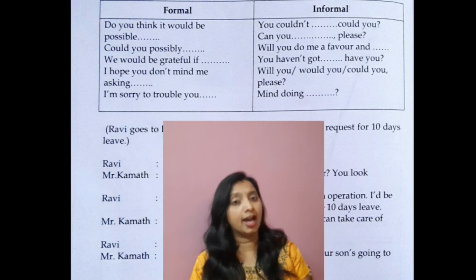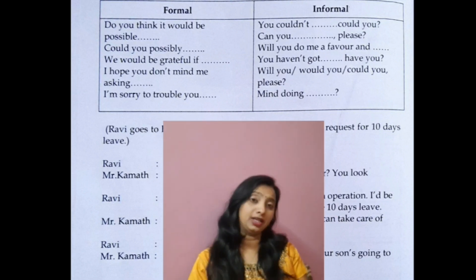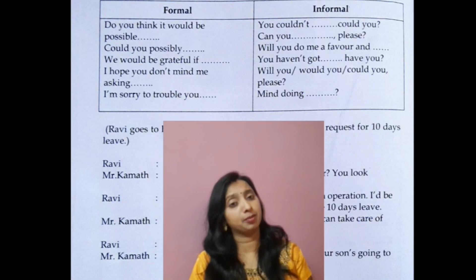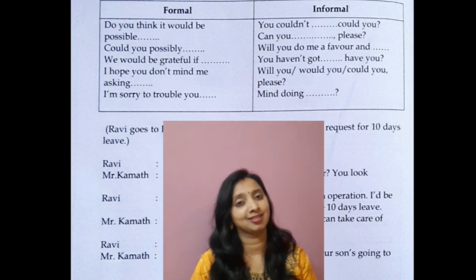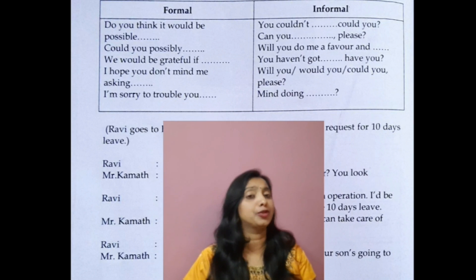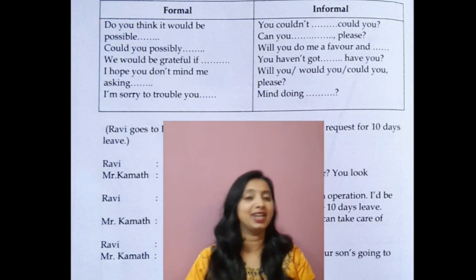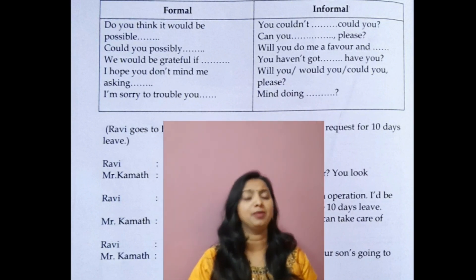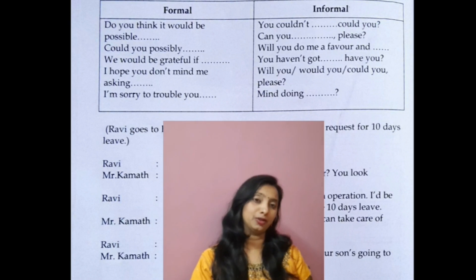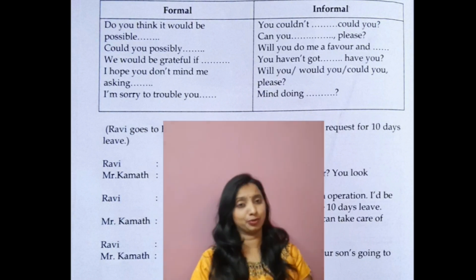Next: 'I hope you don't mind me asking a help from you.' For example: 'I hope you don't mind me asking you to complete this project.' Then: 'I'm sorry to trouble you, but I want you to complete this project for me' or 'I'm sorry to trouble you, but I want a help from you.'